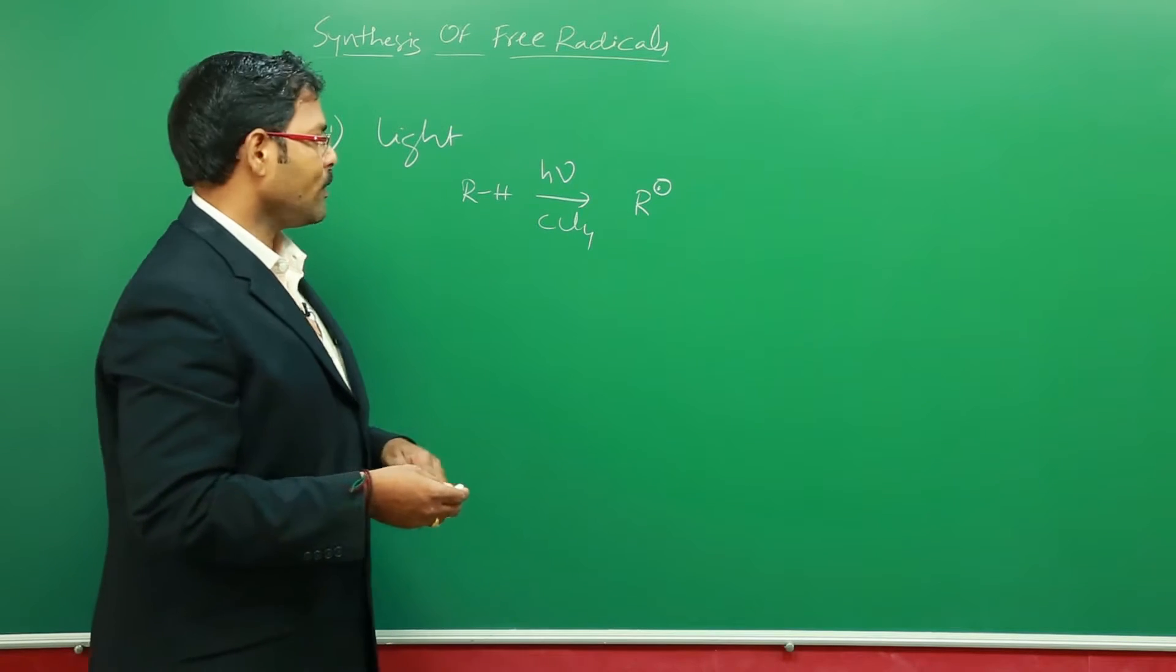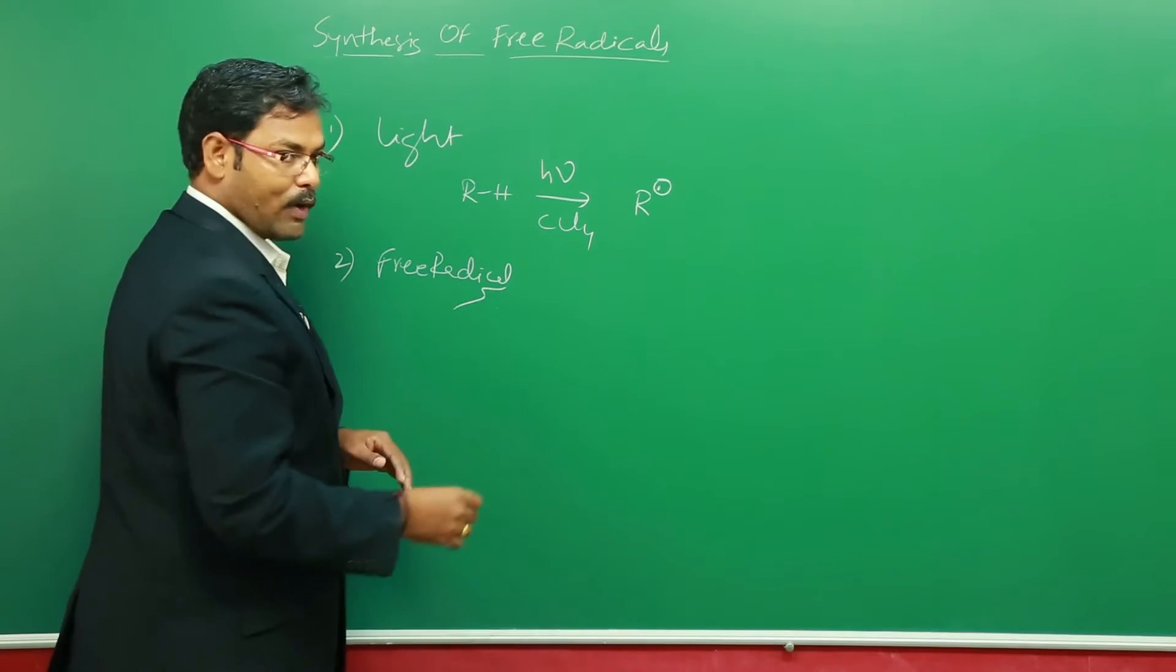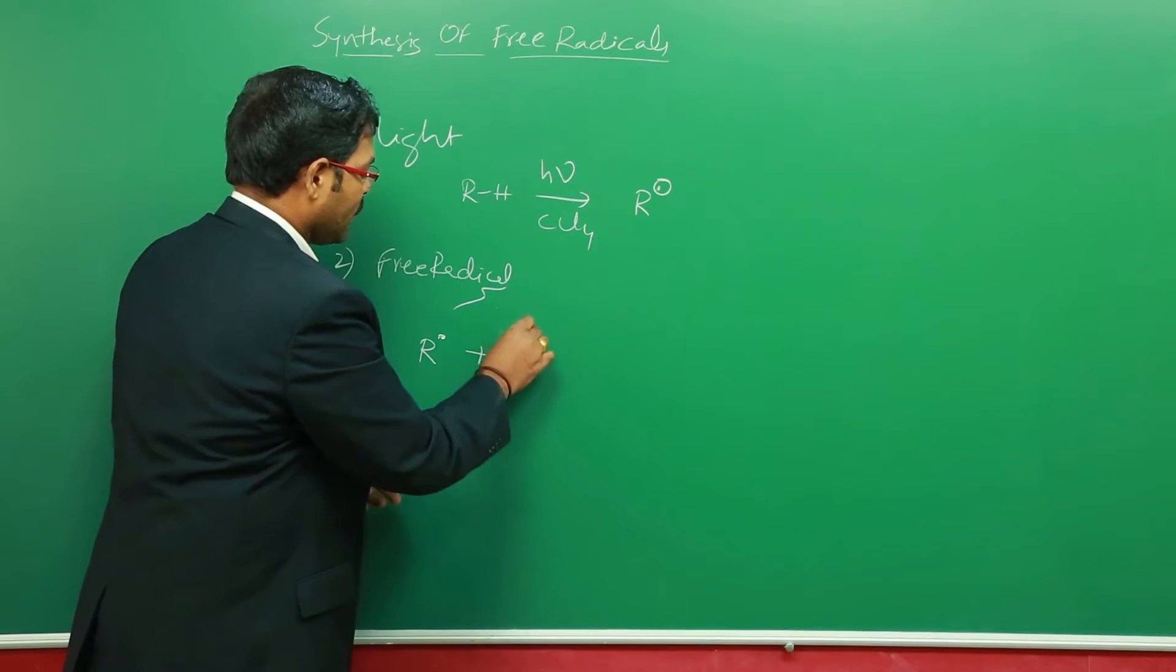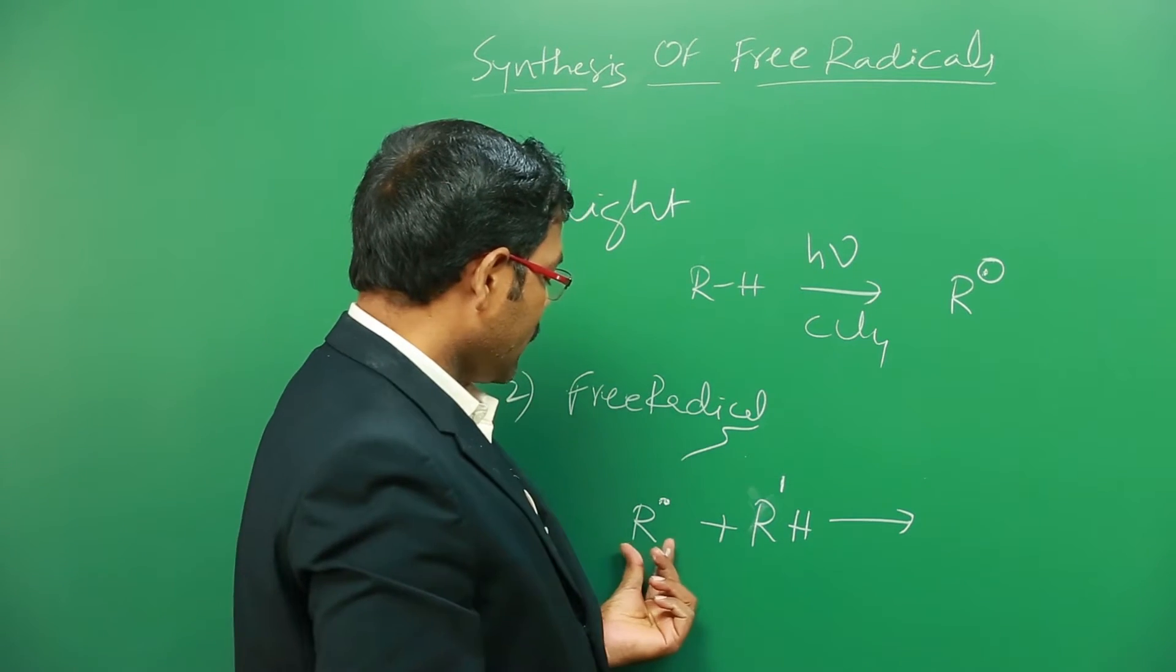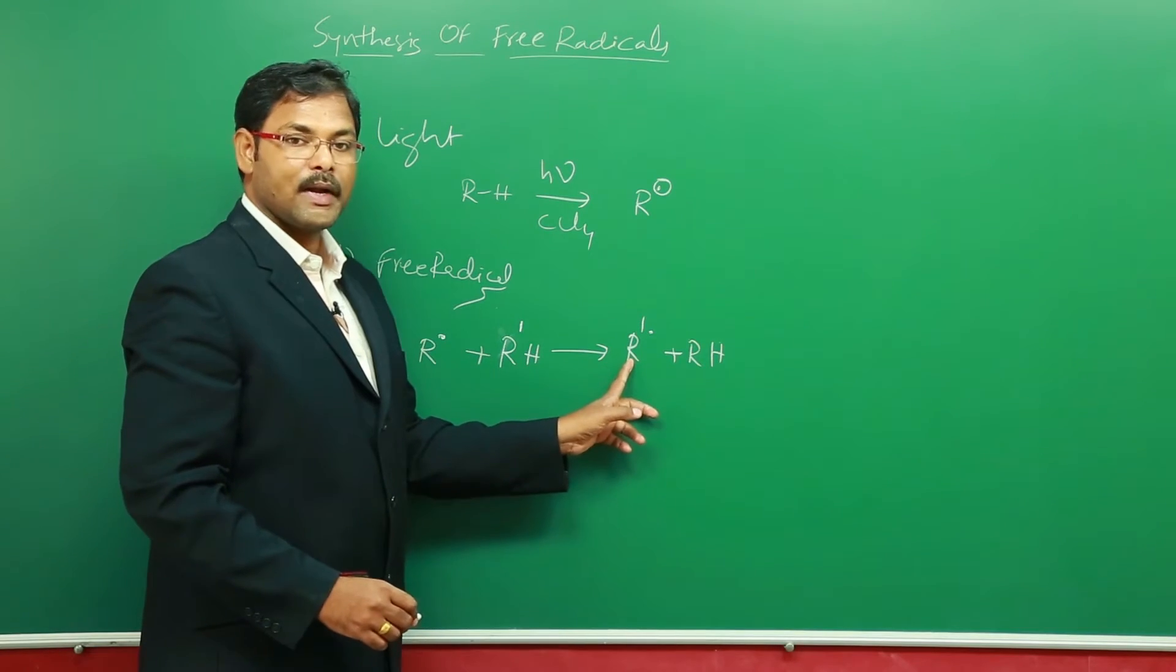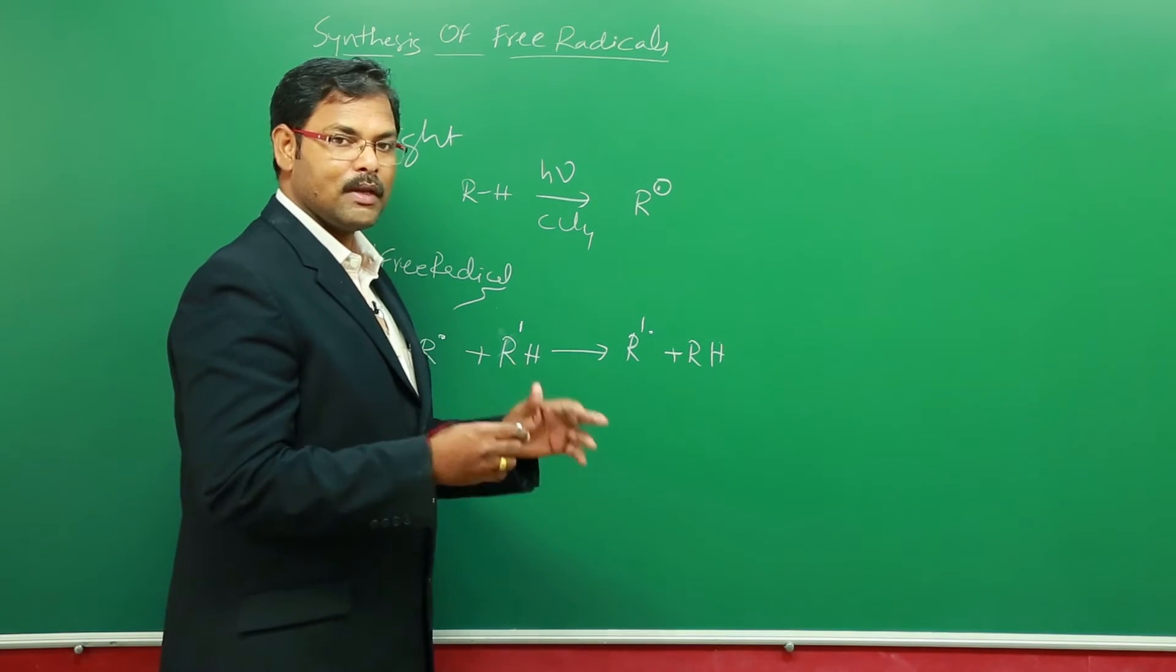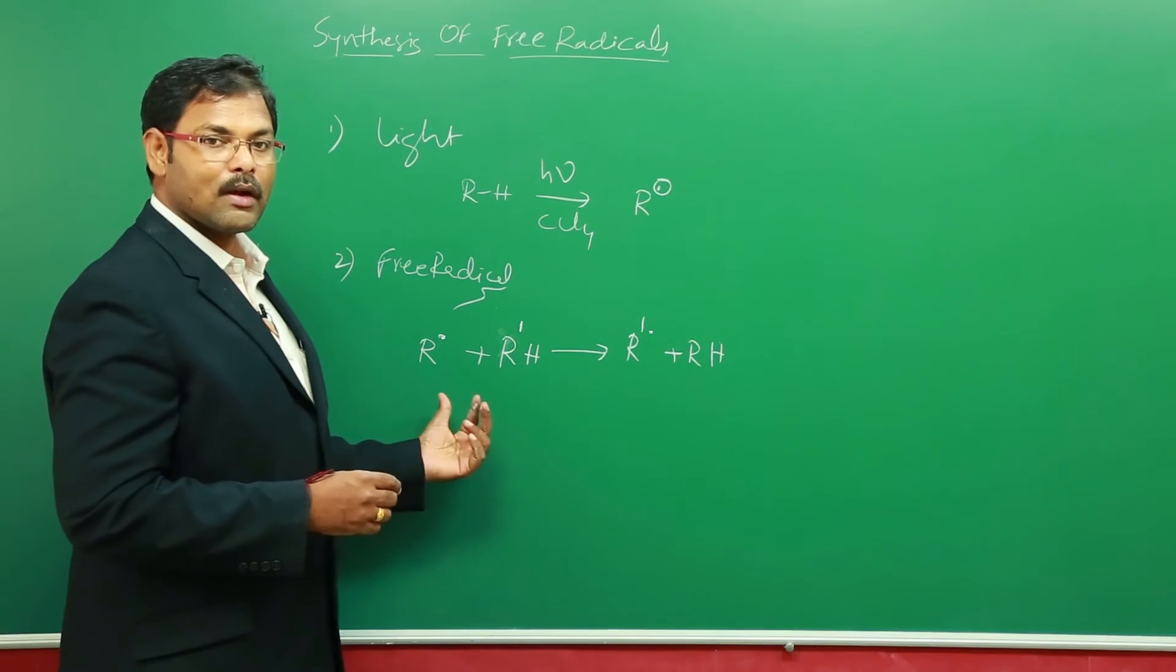The second method is by using a free radical. When you have a free radical already generated and react it with another compound, either the free radical is neutralized so that a newer free radical is generated, or it can undergo several types of reactions. This is the simplest representation of how a free radical can be generated from an already formed free radical.